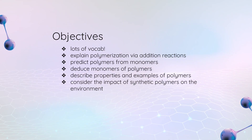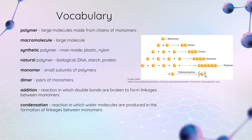Our objectives: we're going to look at so much vocabulary. We're going to talk about polymerization via addition reactions. We're going to look at some monomers and figure out what polymer we could make from them. We're also going to look at some polymers and figure out what monomers made them. We'll talk about the properties of different polymer examples, and then also the impact of synthetic polymers and plastic on the environment.